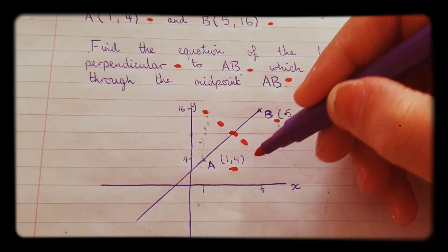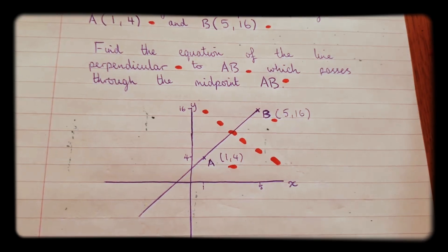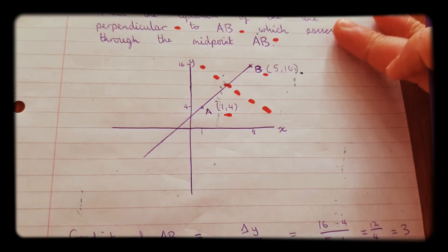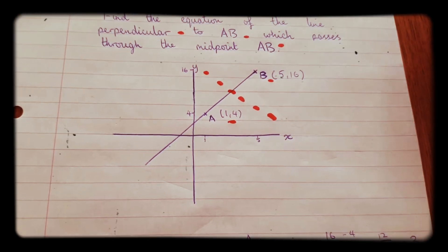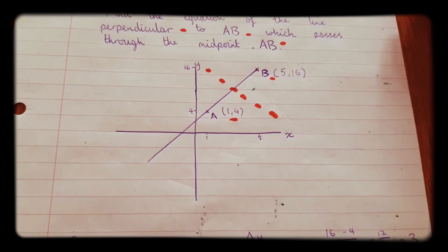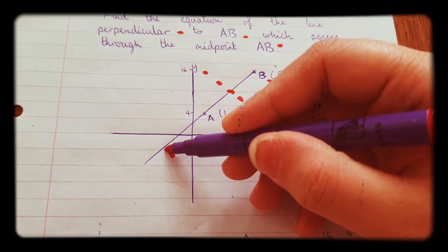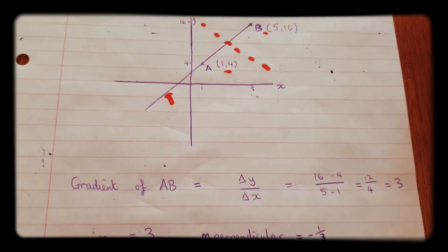And we want the equation of that line. So now we've done that, we need to first of all find the gradient of this line here, AB. We need to figure out that gradient.